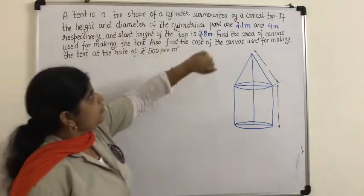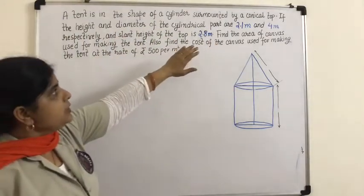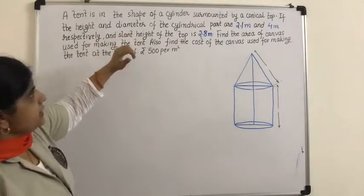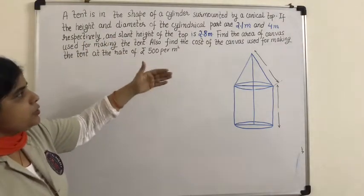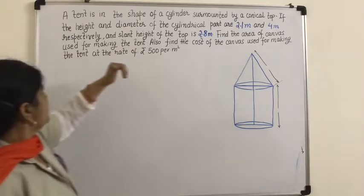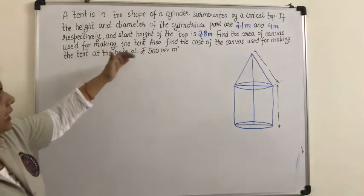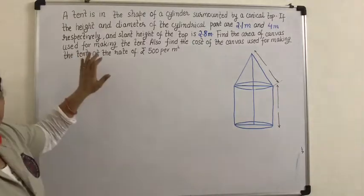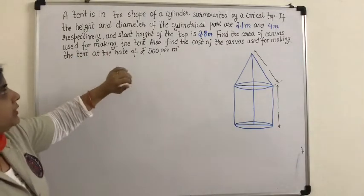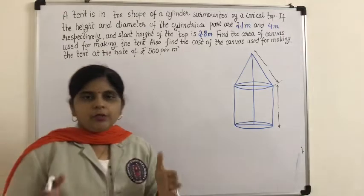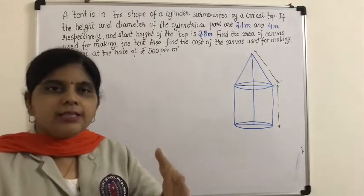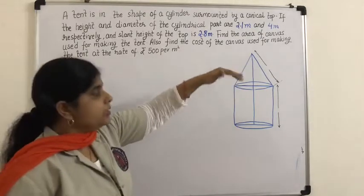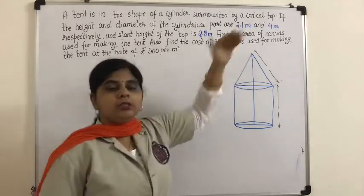A tent is in the shape of a cylinder surmounted by a conical top. If the height and diameter of the cylindrical part are 2.1 and 4 meters respectively, and the slant height of the top is 2.8 meters, find the area of the canvas used for making the tent. This question describes a tent in the shape of a cylinder surmounted by a conical top.